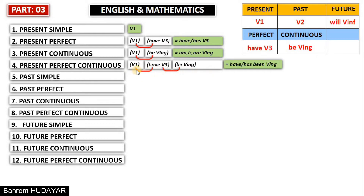Look at the red shapes — this is how you're going to multiply the formulas. The first form of have is have/has. The third form of be is been. You should reflect the properties of verb three to be — that's why we use been. Have/has + been + verb-ing. That's the result. Why didn't we do anything about verb-ing? Because there is nothing to multiply it with. So the main formula of present perfect continuous is have/has + been + verb-ing.